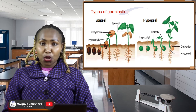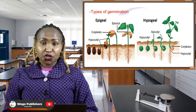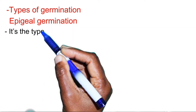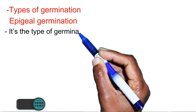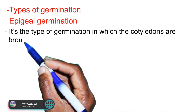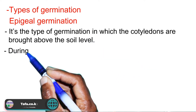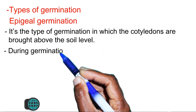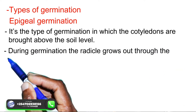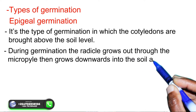We shall start with epigeal germination. This is a type of germination where the cotyledons are brought above the soil level. During this particular type of germination, the radicle grows out through the micropyle and then grows downwards.